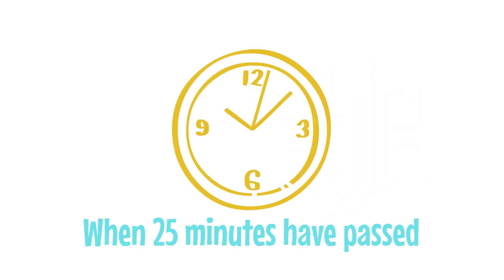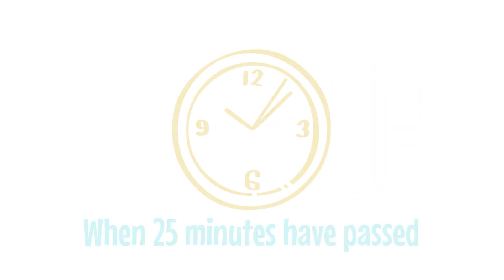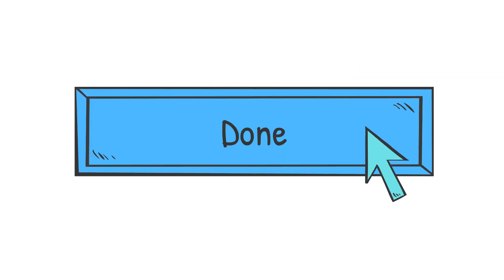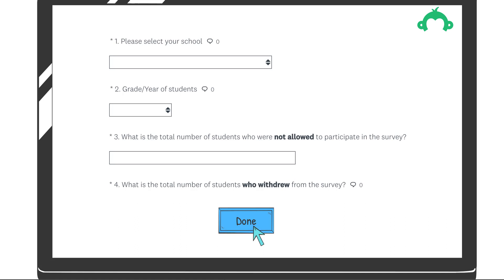Step 5. Once 25 minutes have passed, announce to students that only 5 minutes remain to complete the survey. When time is up, remind students to press the button marked Done in order to submit their survey. Please remember to submit your administrative form as well.